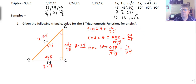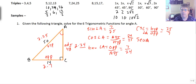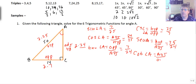Then my reciprocal functions: the cosecant of angle A is hypotenuse over opposite = 25/7. The secant of angle A is hypotenuse over adjacent — just flip the fraction — 25/24. And the cotangent of angle A is adjacent over opposite = 24/7. So I've done all six trig functions from angle A.